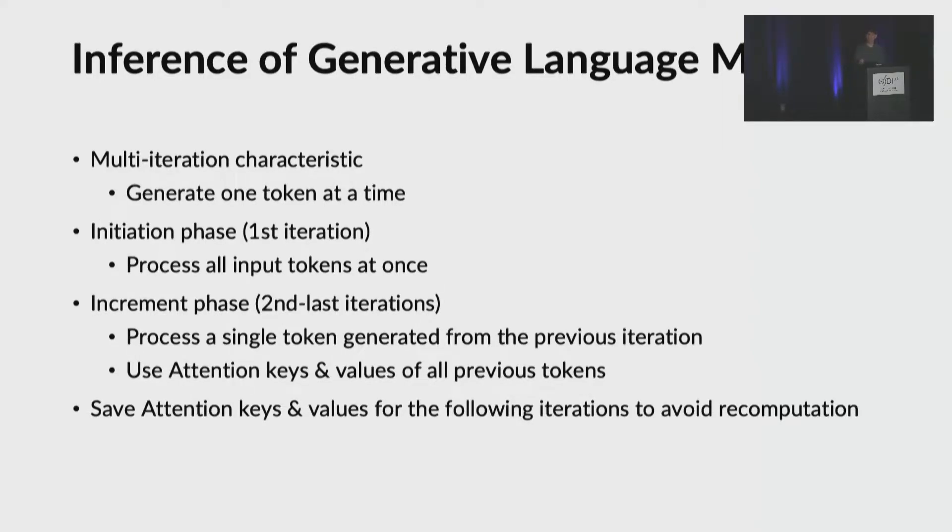In summary, the inference of generative language models has the following characteristics. It consists of multiple iterations. Each iteration generates one token at a time. The iterations can be split into two phases. At the initial phase, we process all input tokens at once. That's the first iteration. In the increment phase, that is from the second iteration all the way to the last iteration, the engine processes a single token generated from the previous iteration while using attention keys and values of all previous tokens. We save attention keys and values for the following iteration to avoid recomputation.